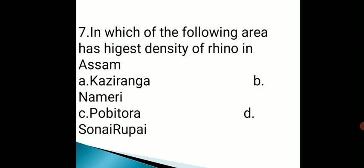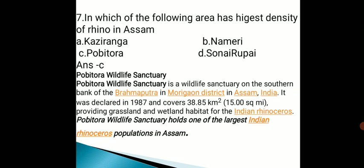Which of the following has the highest density of Rhino in Assam? The answer is Kaziranga. Pobitora Wildlife Sanctuary is also notable — it is located in the Morigaon district on the southern bank of the Brahmaputra. Pobitora's location is an important fact for exams.